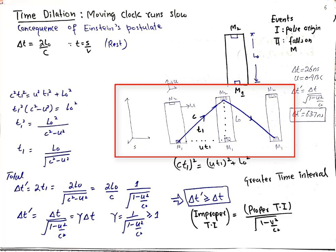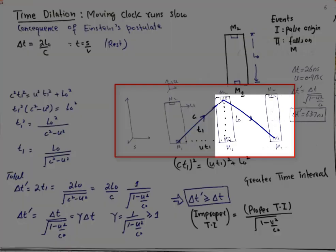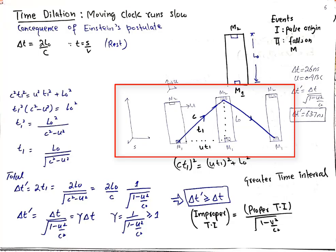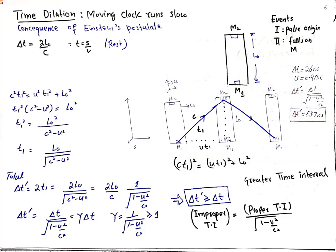Similarly, when light is reflected from M2 and detected back at M1, the same calculation applies and gives the same time interval t2 = t1. The total time interval between the two events is delta_t' = 2t1 = 2L-naught / sqrt(c² − u²). Taking c² common from the denominator, this becomes delta_t' = (2L-naught / c) * 1 / sqrt(1 − u²/c²).